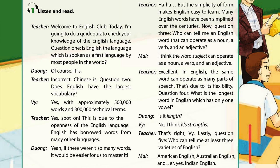That's due to its flexibility. Question 4: What is the longest word in English which has only one vowel? Is it 'length'? No, I think it's 'strength'.